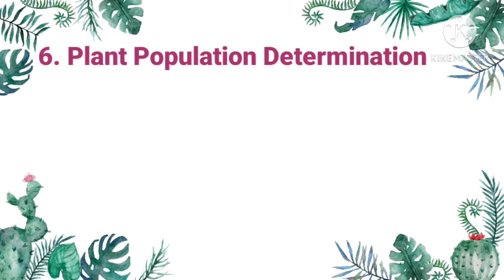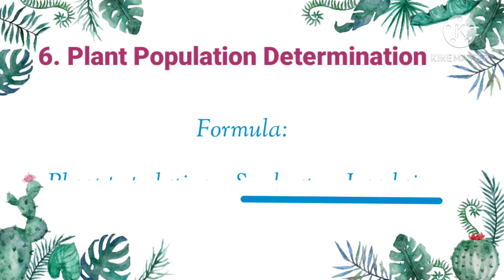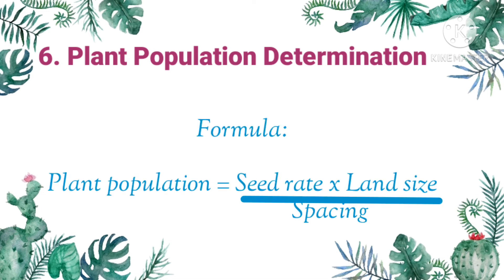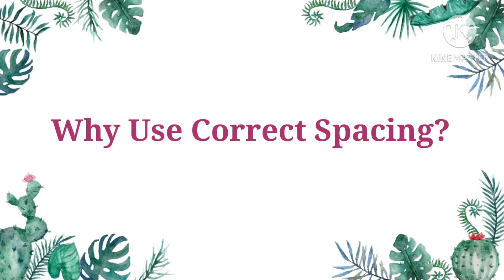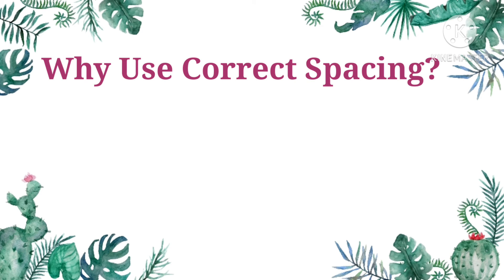Sixth, plant population determination. If you are planting, you should be able to predict your yield. It allows you to estimate your profit and assist in making farm management decisions. There is a formula to calculate the plant population: plant population equals seed rate times land size divided by spacing. Why use correct spacing? First, it is economical — correct spacing normally uses less seeds, which can save you money.